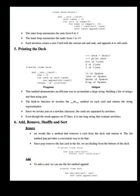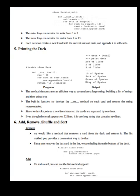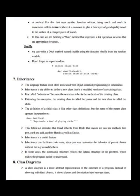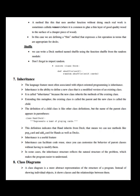Now let's see add, remove, shuffle, and sort. For remove, we would like a method that removes a card from the deck and returns it. The list method pop provides a convenient way to do that — since pop removes the last card in the list, we are dealing from the bottom of the deck. For add, to add a card we can use the list method append. A method like this that uses another function without doing much real work is sometimes called a veneer — it defines a thin method that expresses a list operation in terms appropriate for decks. For shuffle, we can write a deck method named shuffle using the function shuffle from the random module. Don't forget to import random.